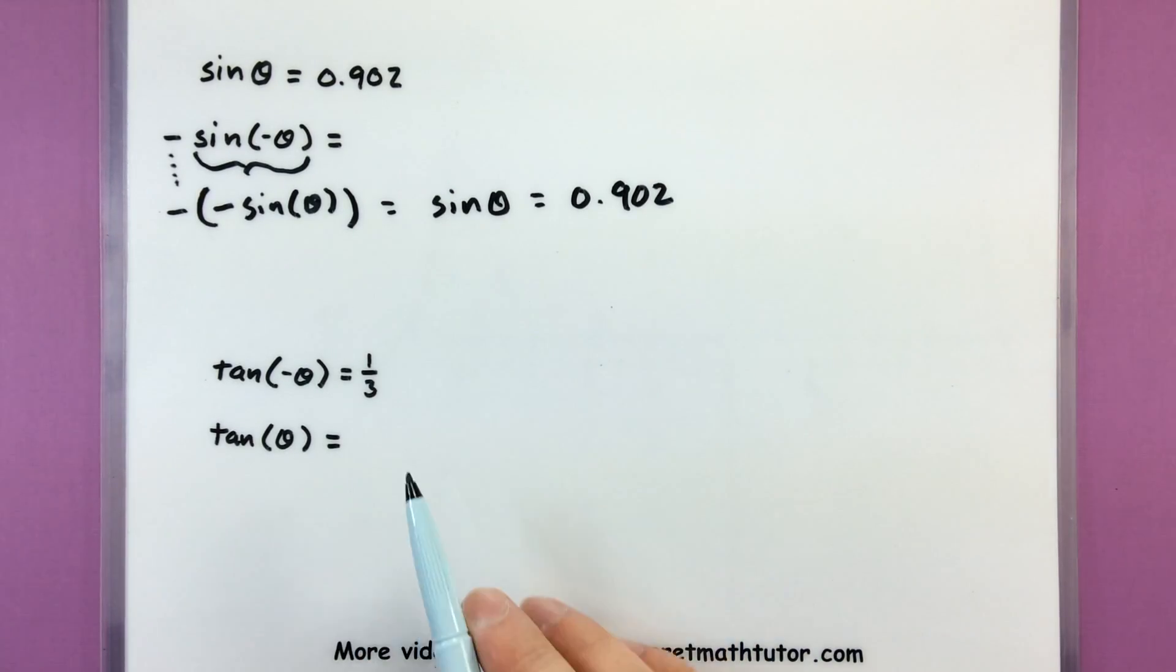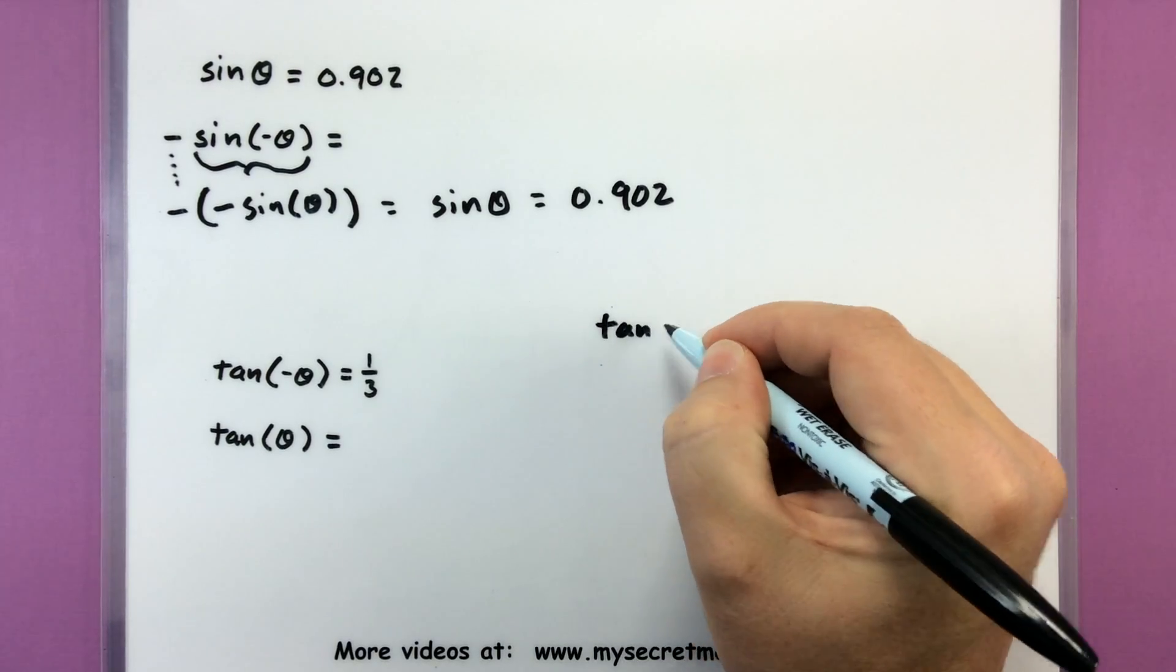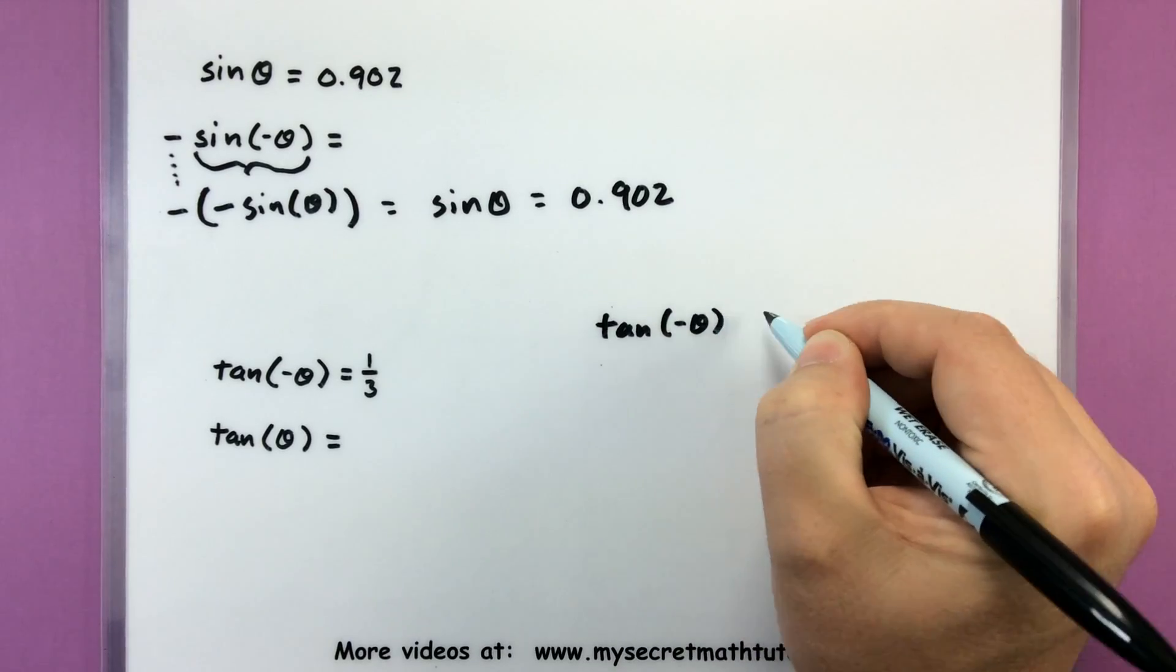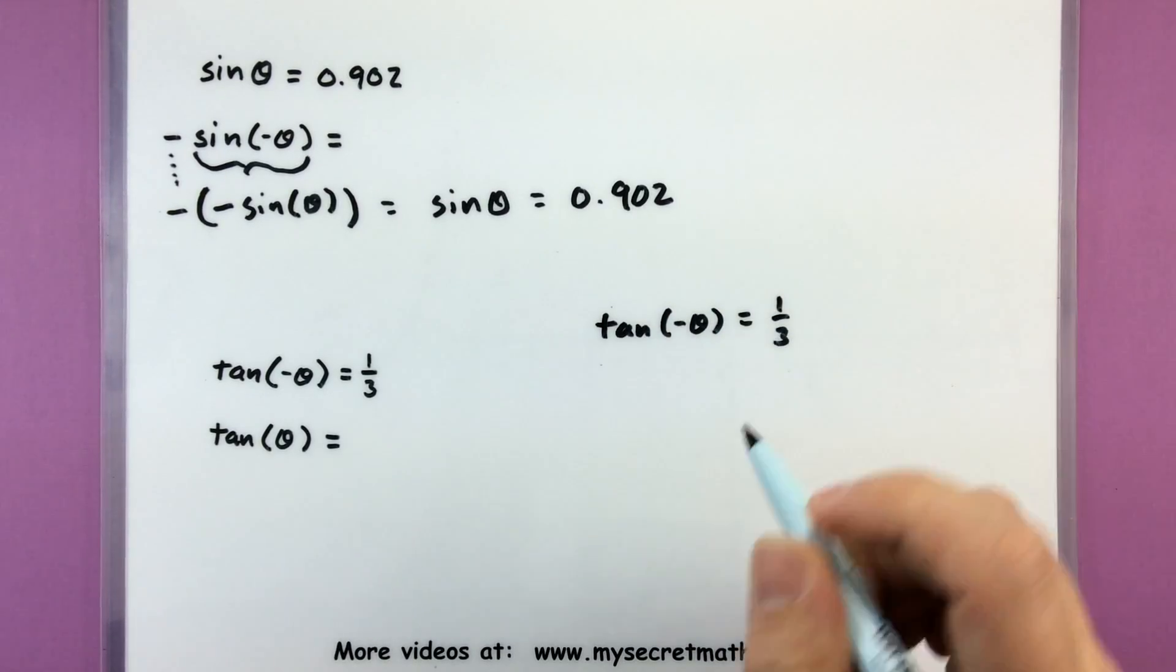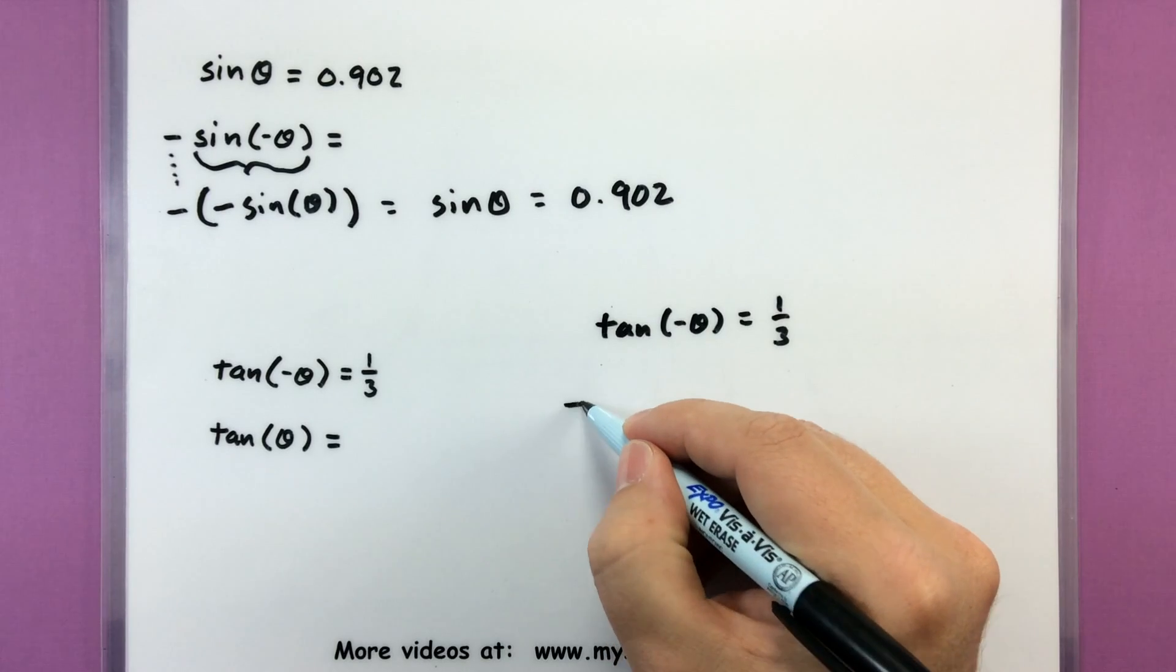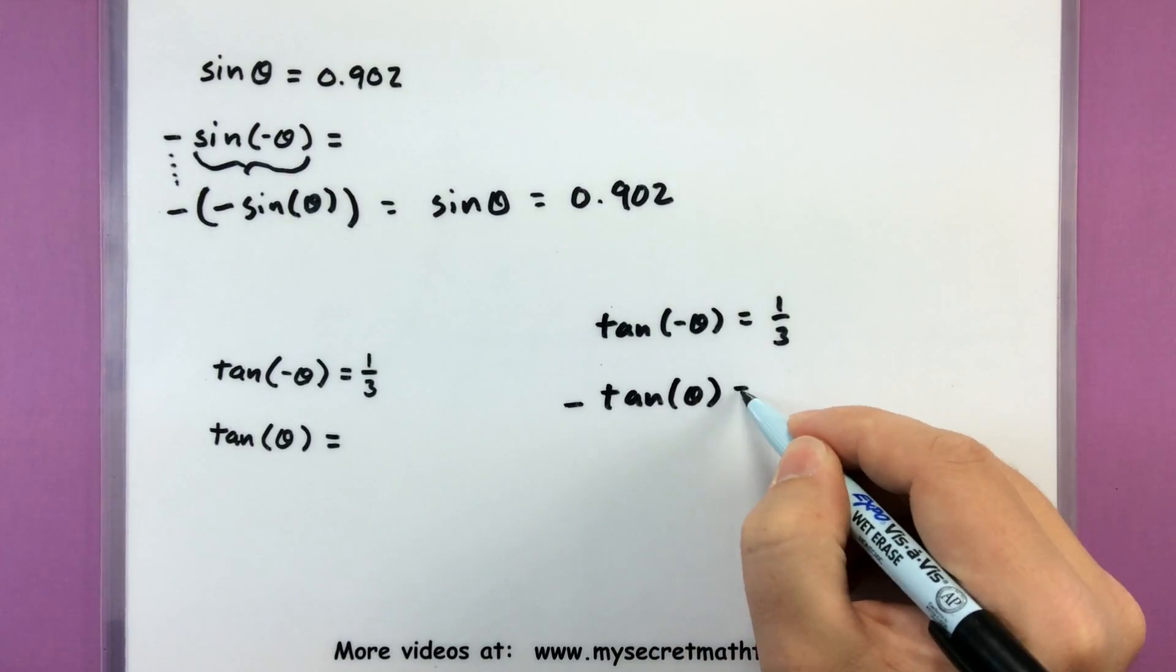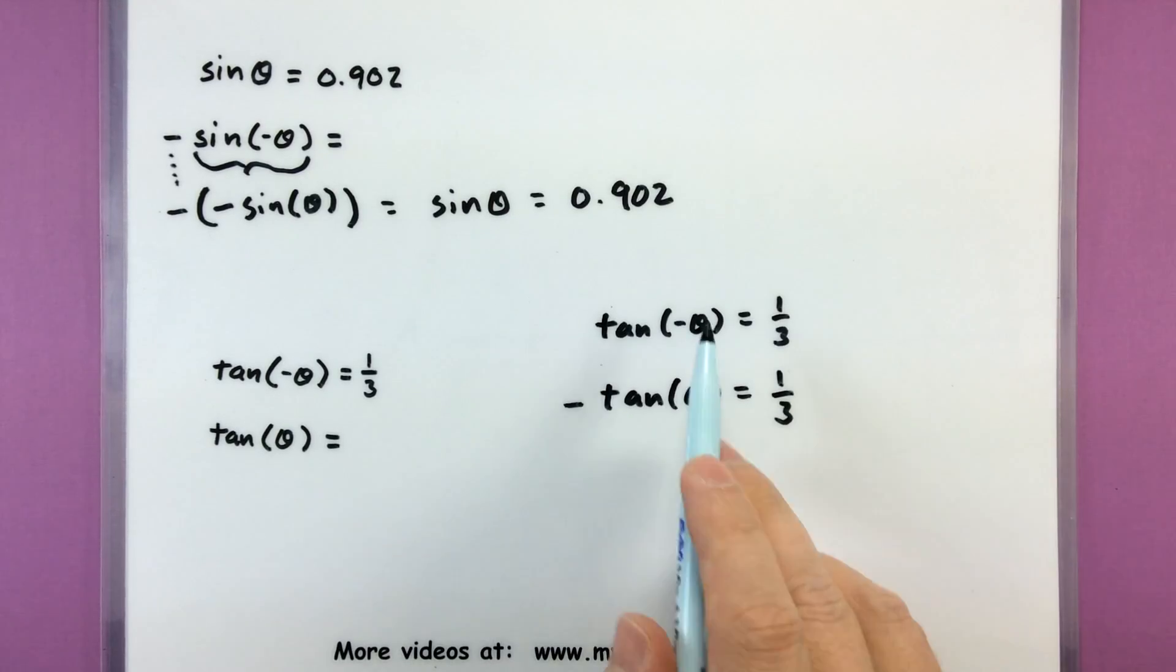Now this one, I have information about tangent of negative theta. It's equal to one-third. I'm looking for the value of positive tangent. So again, we're going to do some rewriting. Let's go ahead and start with tangent of negative theta equals one-third. So I can start to use my identities on just the tangent of negative theta. And what I need to do with this negative sign is bring it out front. So negative tangent of positive theta equals one-third.